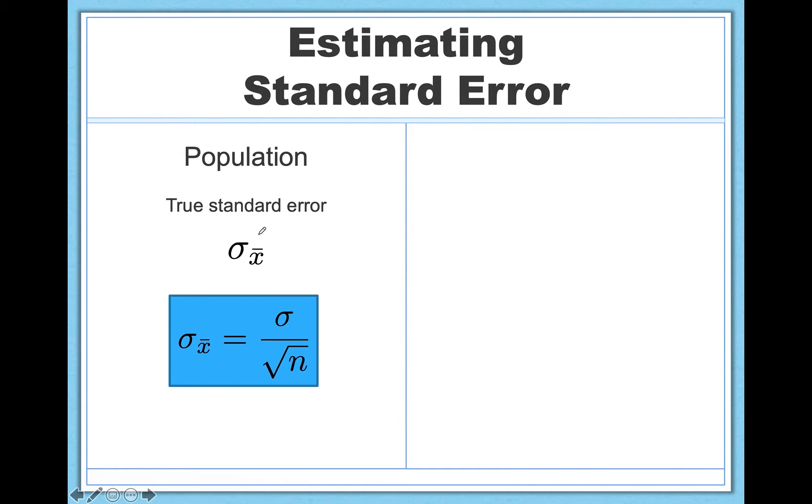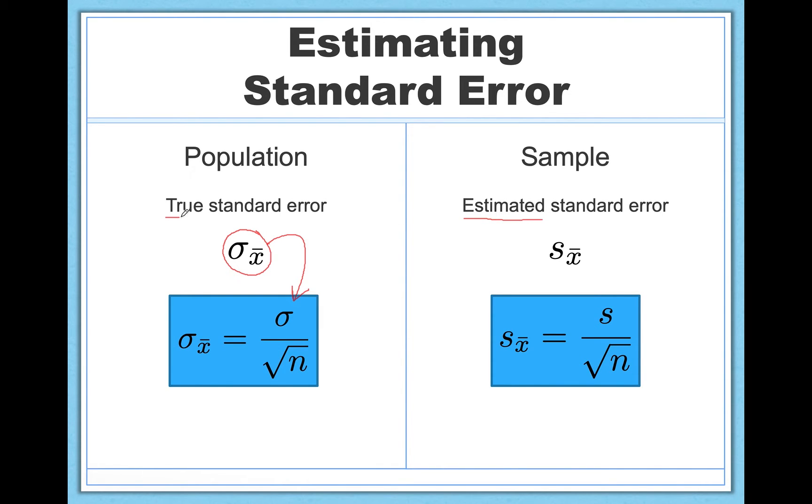So if this then is the formula for true standard error, this is, by the way, what goes in the denominator of the one sample z test, then this is the formula for estimated standard error. And remember, estimated standard error is going to be an unbiased estimator of true standard error. And so look at the similarities. It's basically the same. We have the same subscript and everything. The denominator is the same, square root of our sample size. It's just this that changes. The numerator, instead of needing to know true standard deviation, we're simply going to plug in sample standard deviation.